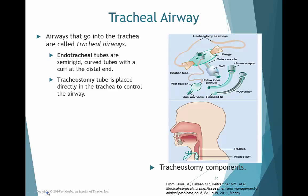Patients can have tracheal airways — airways that go directly into the trachea. Options include a tracheostomy, which is created through a hole in the neck area, or an endotracheal tube, which is inserted either orally or nasally and sits just before the bifurcation into the right and left bronchi.